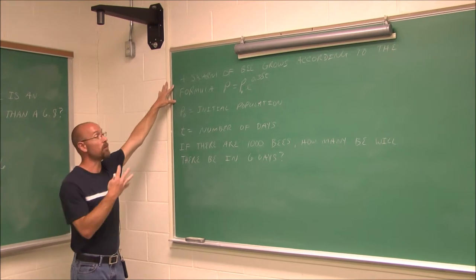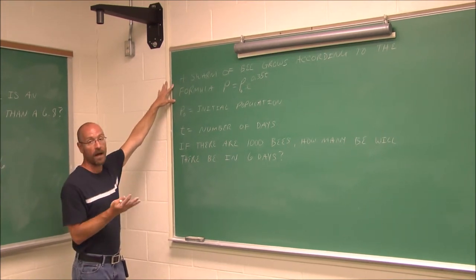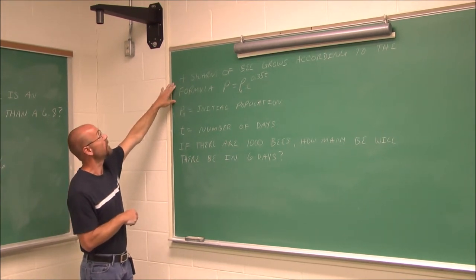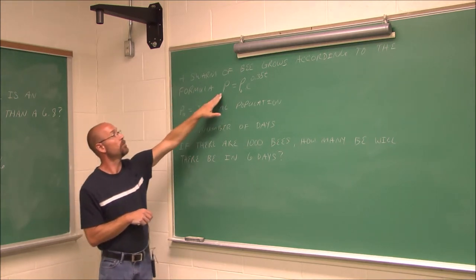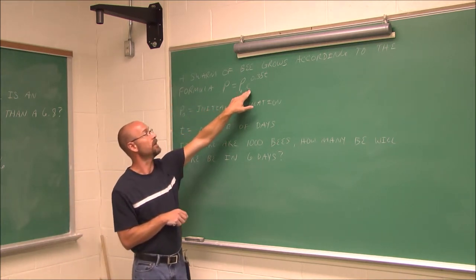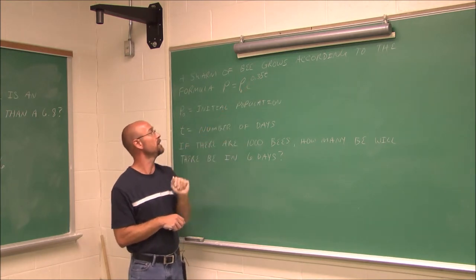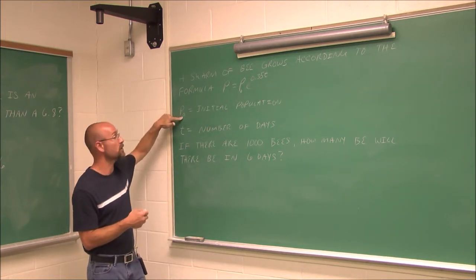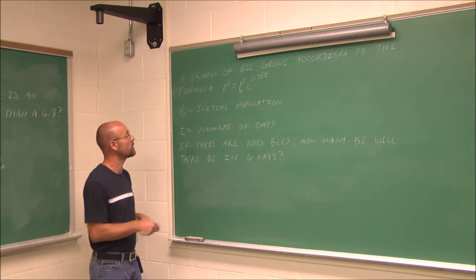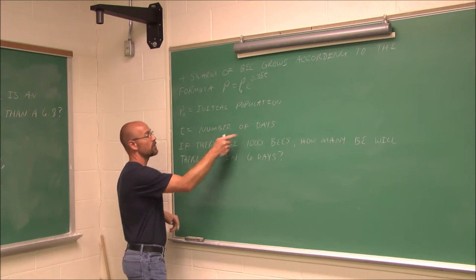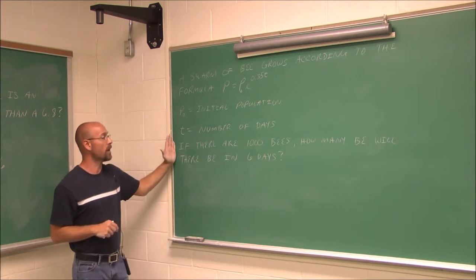Let's look at this one. Maybe we're looking at something in terms of biology. We have a swarm of bees grows according to the formula p equals p0e to the 0.35t, where p0, or p initial, is the initial population of bees. And t is the number of days.